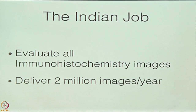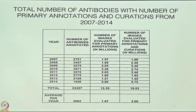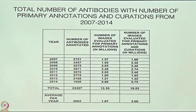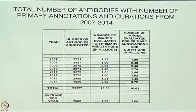Our job was to evaluate all the IHC images and deliver 2 million images per year — roughly 7,000 images a day, manually. Those are the statistics we followed from 2007 to 2014. Beyond original annotations, there was also the question of quality control — and we had to work very hard to prove that there was really no difference whether images were annotated in India, Sweden, Norway, or anywhere else. Everybody agreed, and the statisticians became our best friends because they proved that.